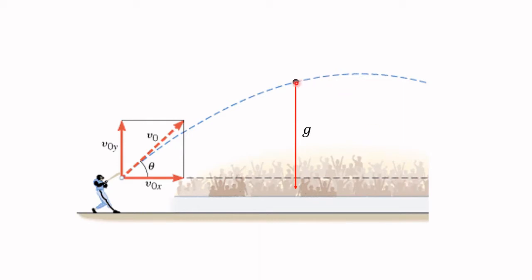Here's the baseball at some arbitrary point along the trajectory, and I'm showing you that there's an acceleration vector straight down. We call that the gravitational acceleration — it's really towards the center of the Earth, but we think of that as straight down. What's the length of this vector? In SI units it would be 9.8 meters per second per second.